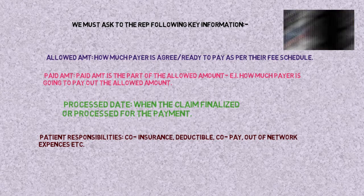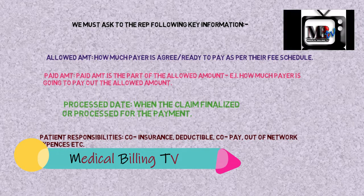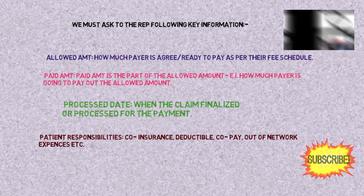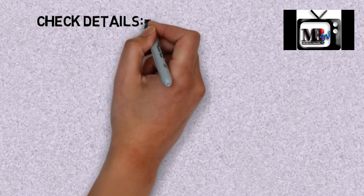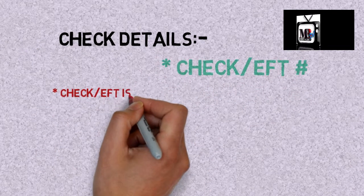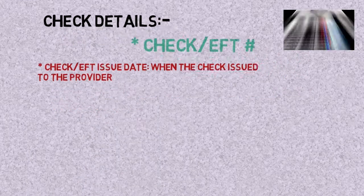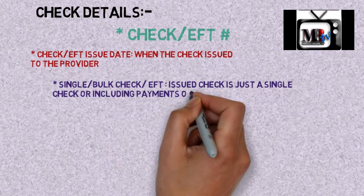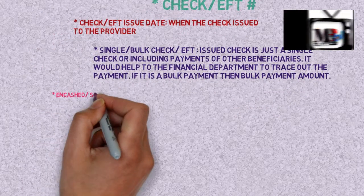Process date is the date when the insurance company finalized or processed the claim. Patient responsibilities include cost-sharing tools applied as per the patient's plan — such as co-insurance, co-pay, deductible, and out-of-pocket expenses. We also need check details: whether it is a paper check or an EFT (electronic fund transfer). If it is a paper check, we get the paper check number; if EFT, we get the EFT number, along with the issue date.